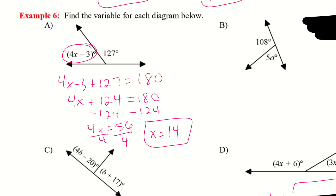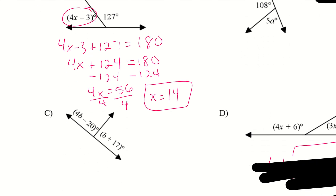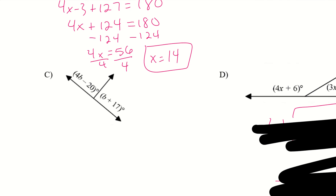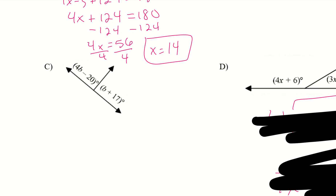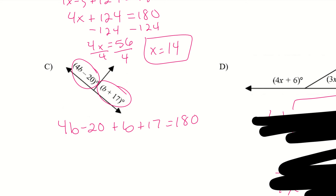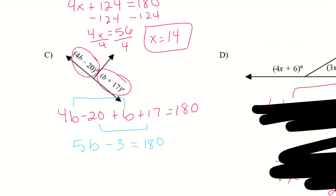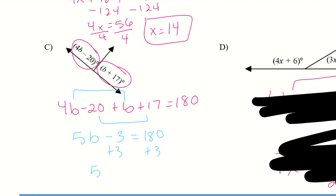They still add up to equal 180 even if we have a whole expression. For C, even though it has more than one term, we still add them together and they equal 180. Combining like terms: 5B minus 3 equals 180. Add 3 to both sides: 5B equals 183. Divide by 5 — B equals 36.6.